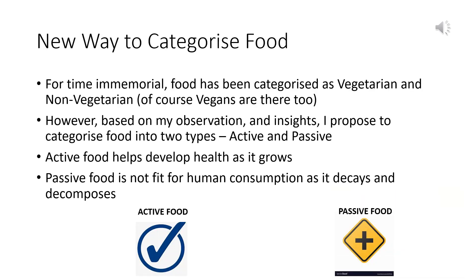This is a new way to categorize food. For time immemorial, food has been categorized as vegetarian and non-vegetarian — of course, vegans are there too. However, based on my observation and insights, I propose to categorize food into two types: active and passive.